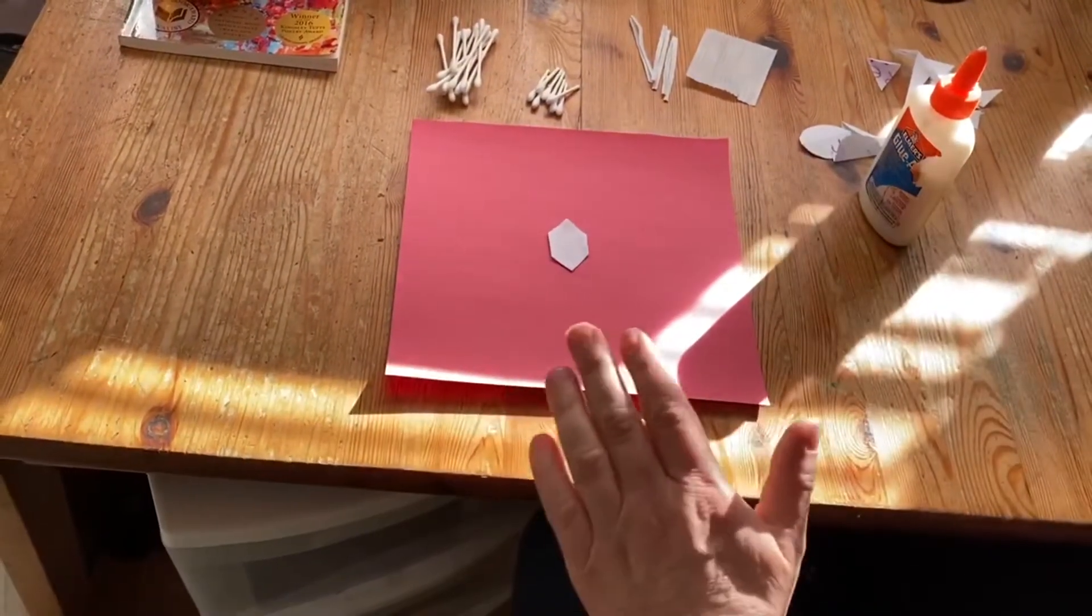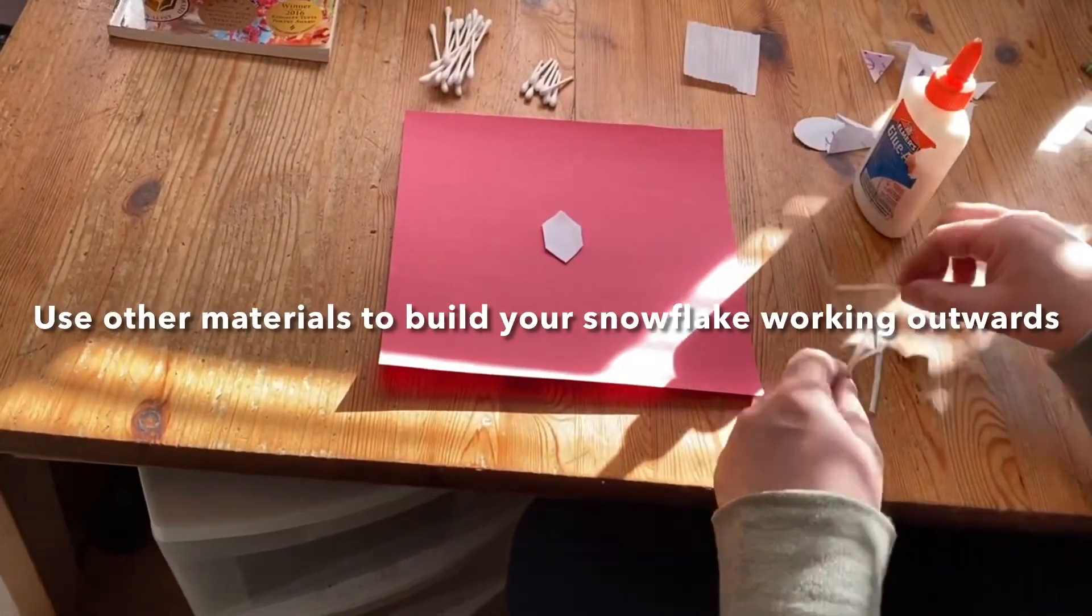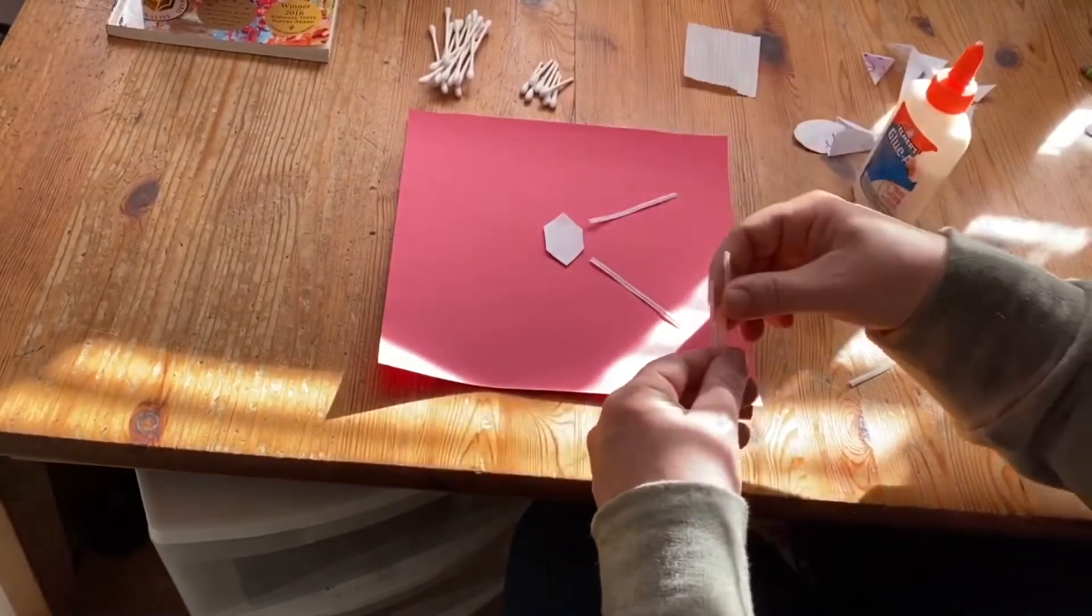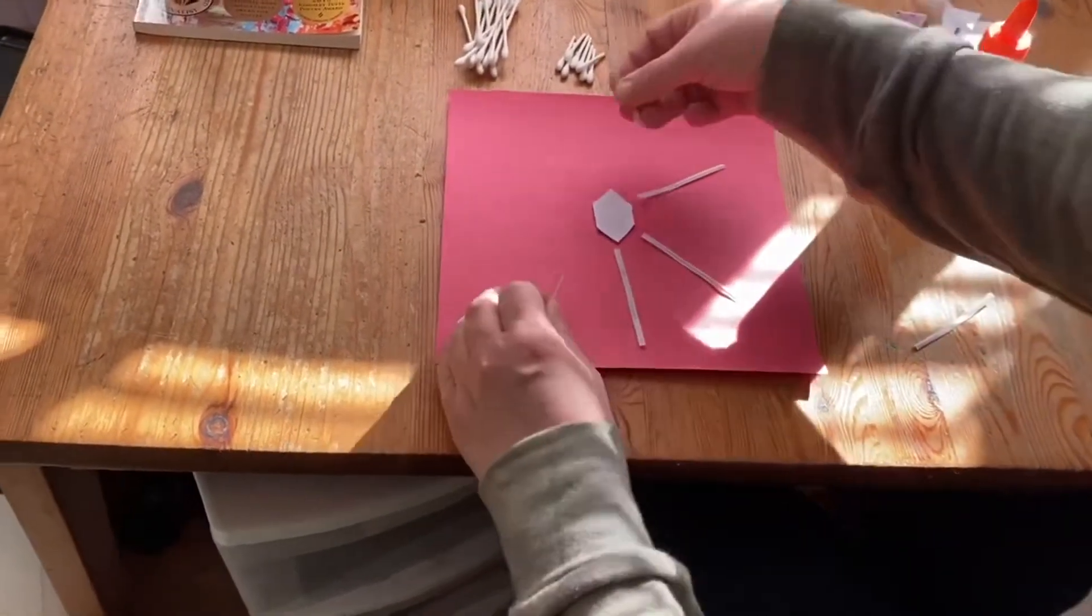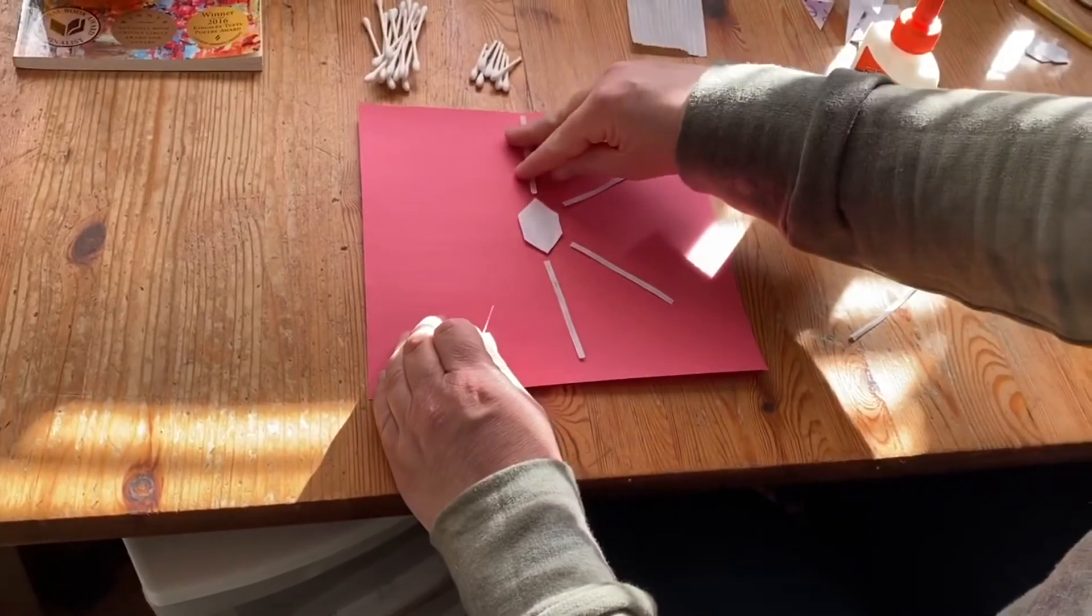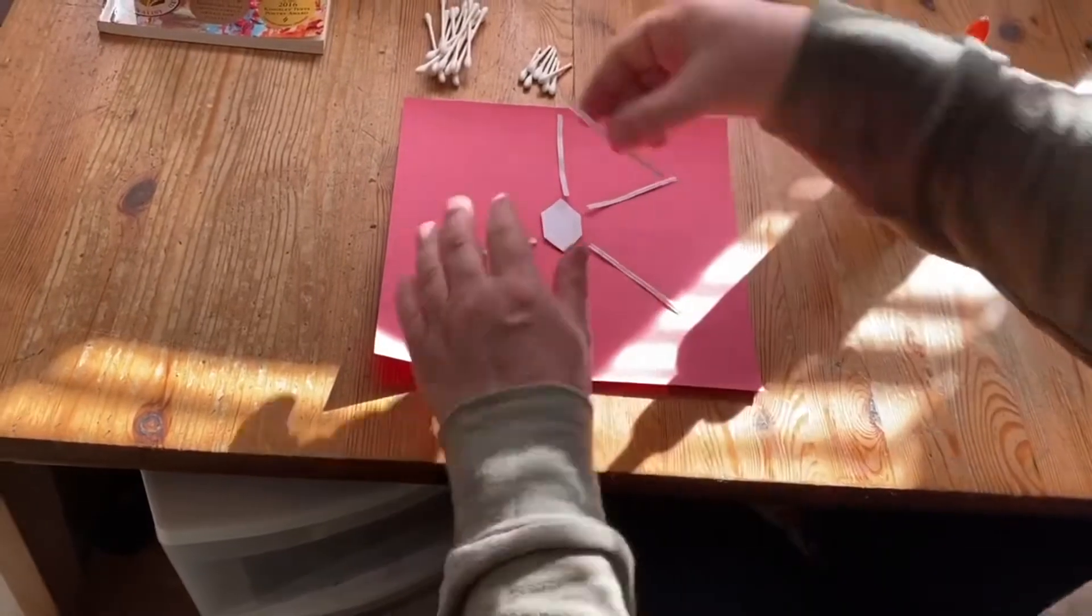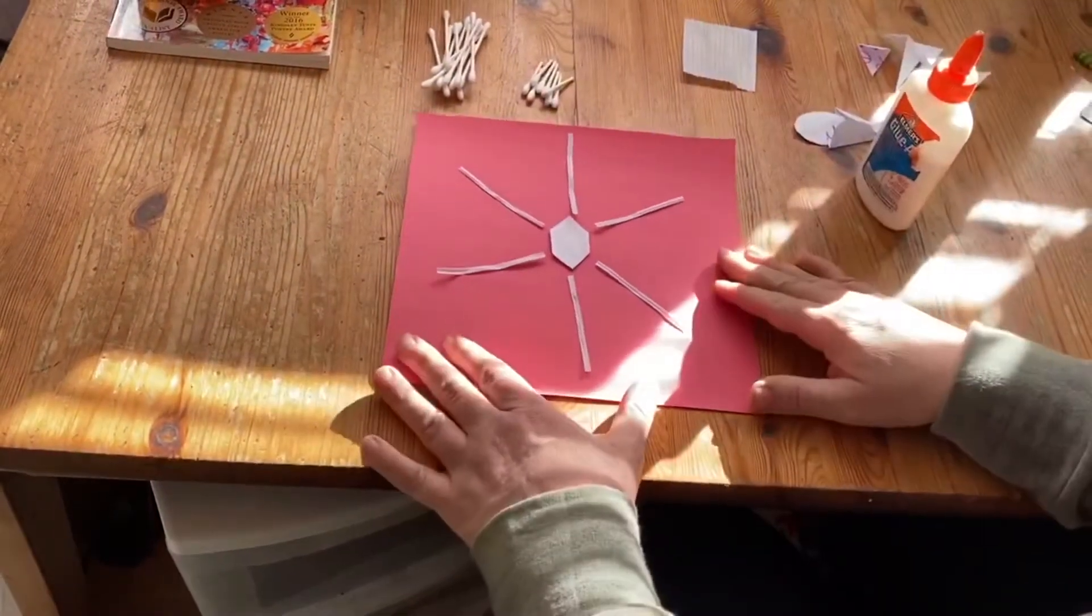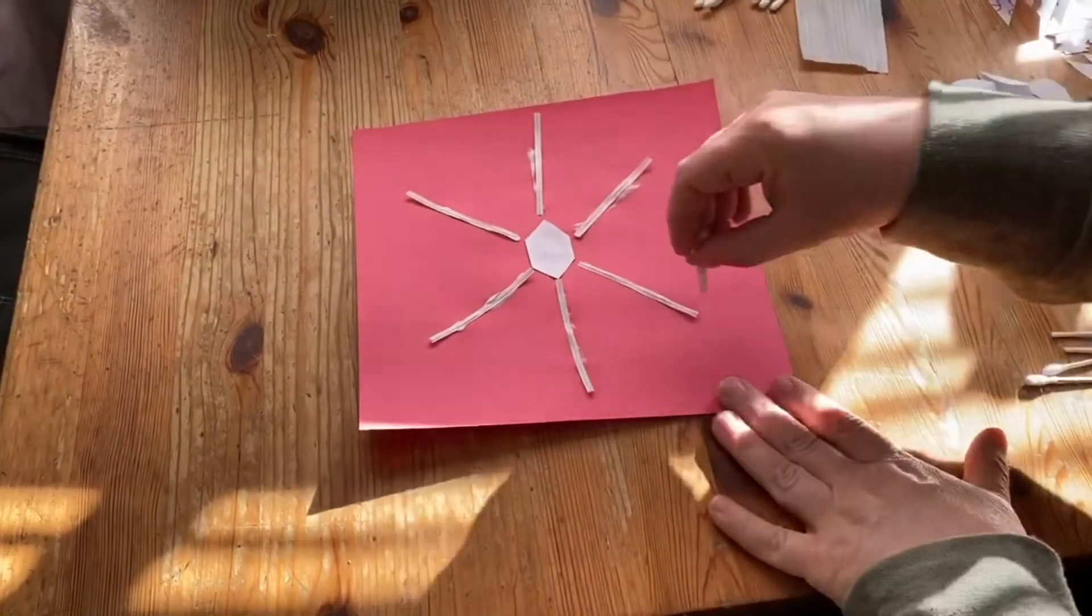And then I'm going to use these twisty ties to make little rays coming out from the points of my snowflake. And it's good to lay them on the paper first to kind of see if you like the way it looks. Okay, so I've got these all glued down.